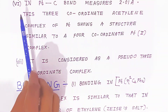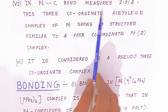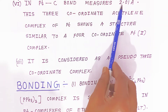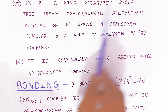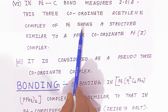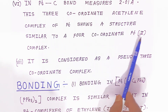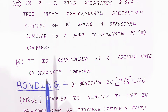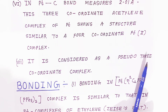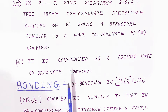The platinum-carbon bond length measures 2.01 Ångströms. This three-coordinate acetylene complex of platinum shows a structure similar to a four-coordinate platinum(II) complex, and is therefore considered a pseudo three-coordinate complex.